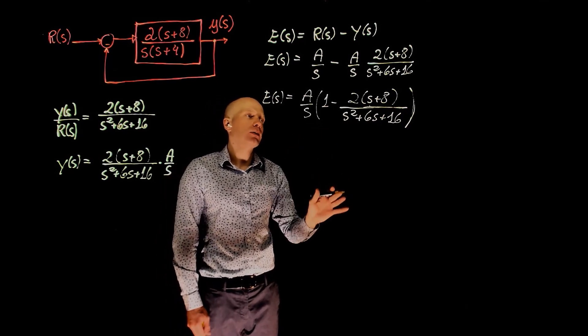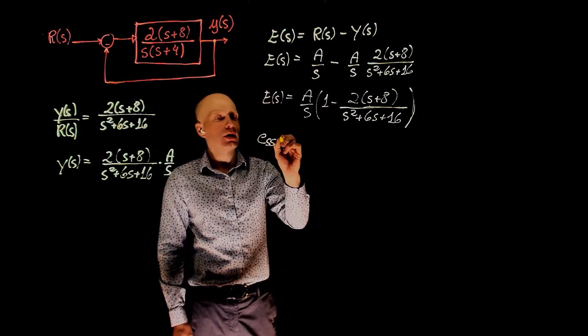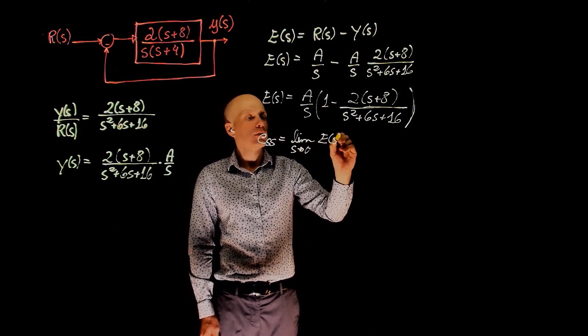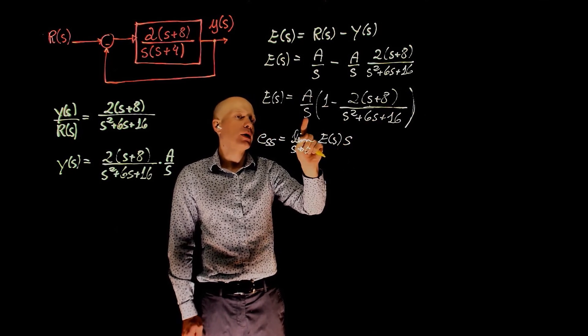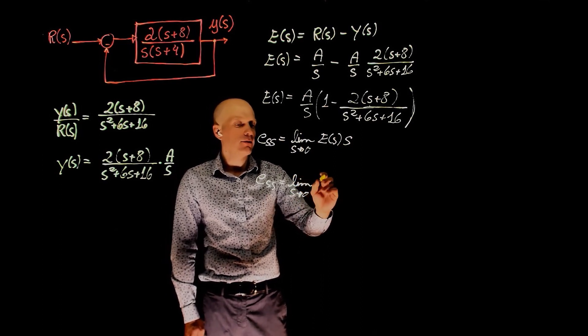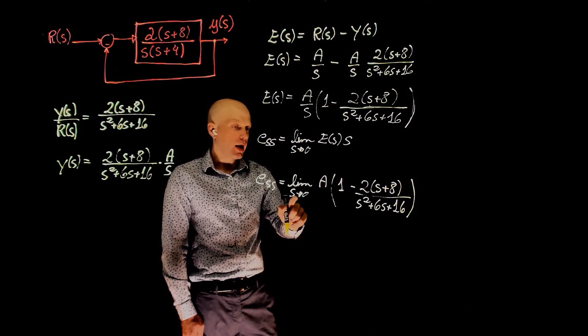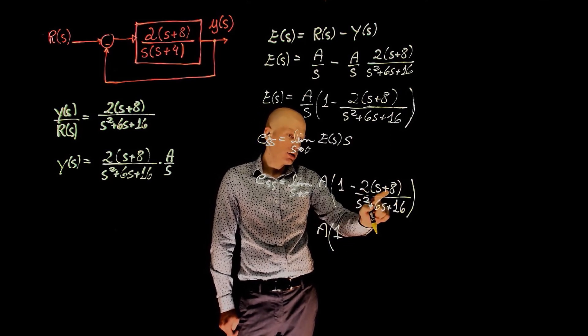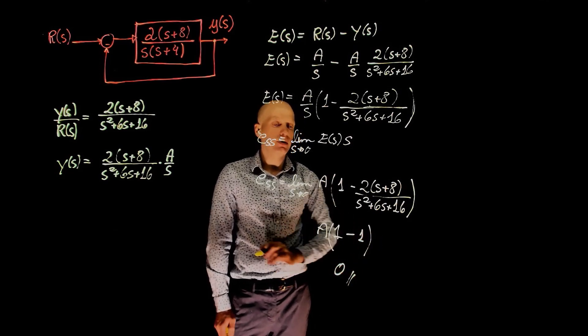So this is expression for the error at all times, the steady-state error is the limit of this times s, when s tends to 0. So the error in steady-state is the limit, when s tends to 0 of e of s, times s. Now replace e of s by this entire function. This s from the theorem cancels this s out. So the error in steady-state becomes the limit, when s tends to 0 of a, times that. And now when s tends to 0, we are left with 1 minus s is 0, so minus 8 divided by 8, minus 1. And the steady-state error is 0.